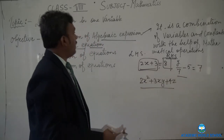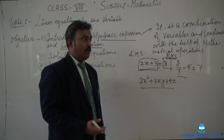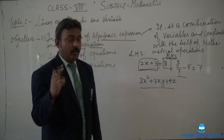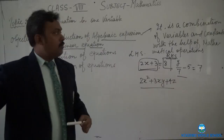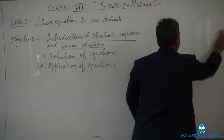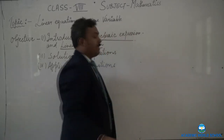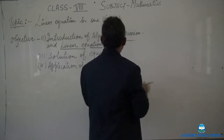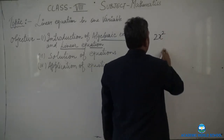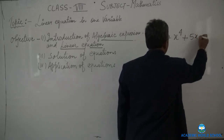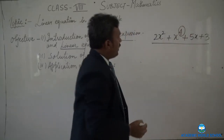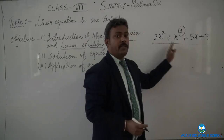We categorize algebraic expressions on the basis of their terms and on the basis of degree. Degree is the highest power of a variable in an algebraic expression. For example, in 2x² + x⁴ + 5x + 3, the highest power is 4. So the degree of this algebraic expression is 4.